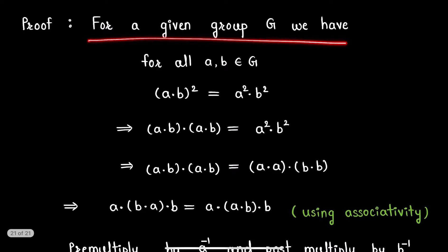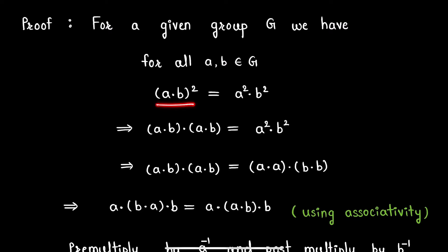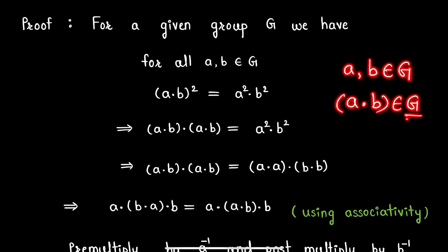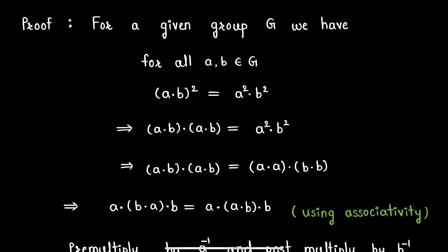For a given group G, we have for all elements a, b in group G: (a·b)² = a²·b². Now since a and b are any elements of group G, thus a·b will again be some element of group G. So this (a·b)² can be written as a·b·a·b.